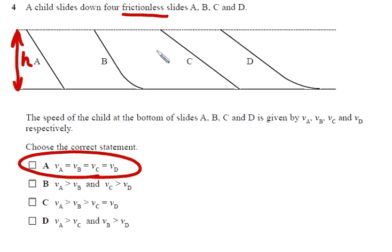A child slides down four frictionless slides A, B, C, D. The speed of the child at the bottom of all the slides is given by VA, VB, VC, VD. Choose the correct statement. Which one of these relationships is true?